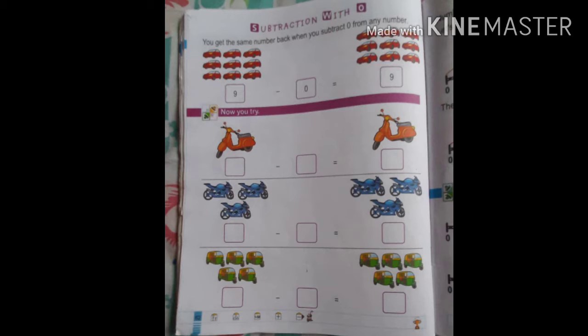You get the same number back when you subtract 0 from any number. Hum kisie bhi number ko 0 se subtract karate hain, to aapko wohi number wapas mil jayega. Kisie bhi number ko aagar subtract 0 se karenge, to wohi number wapas mil jayega.